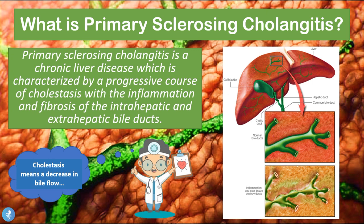Every time we talk about cholestasis — 'choler' meaning bile and 'stasis' meaning to be still or not flow — it means we have a decrease in bile flow. In normal bile ducts, bile flows quite smoothly through these channels, but in patients with primary sclerosing cholangitis, that bile has a very hard time passing through the various channels, which explains why they suffer from cholestasis.